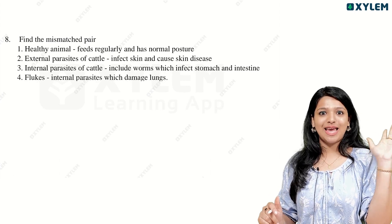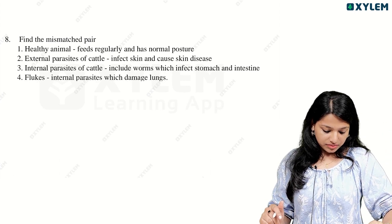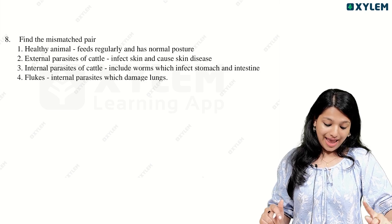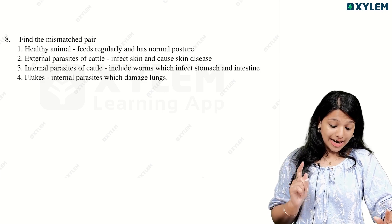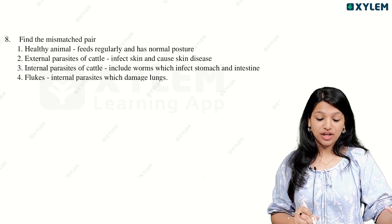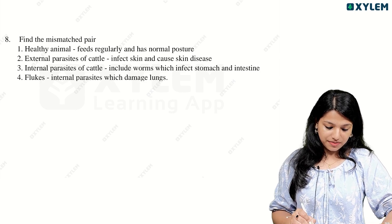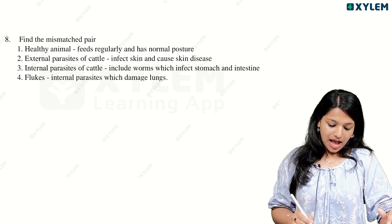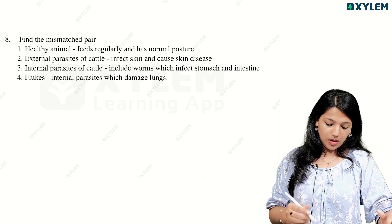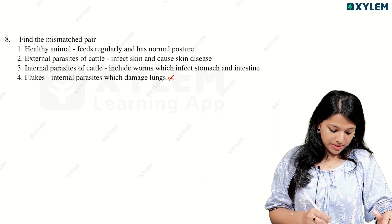Eighth question — find the mismatched pair. A healthy animal feeds regularly and has normal posture. External parasites of cattle infect the skin and cause skin disease. Internal parasites include worms which infect the stomach and intestines. Flukes are internal parasites which damage the lungs. Lungs are not the correct organ here — internal parasites affect internal organs like the liver. So lungs are not correct, making this the wrong statement.